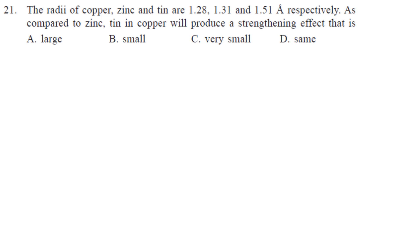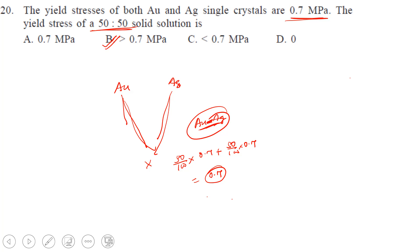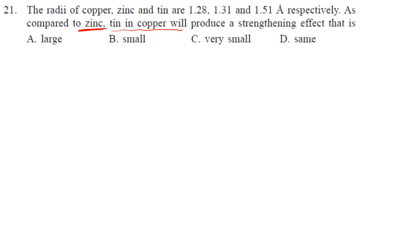Let's come to part three. The radii of copper, nickel, and tin are 1.28, 1.31, and 1.51 angstrom respectively. As compared to zinc, tin in copper will produce a strengthening effect. The question is: as compared to zinc, tin in copper. The size of tin is 1.51 angstrom, and the size of zinc is 1.31. The size of copper is 1.28.